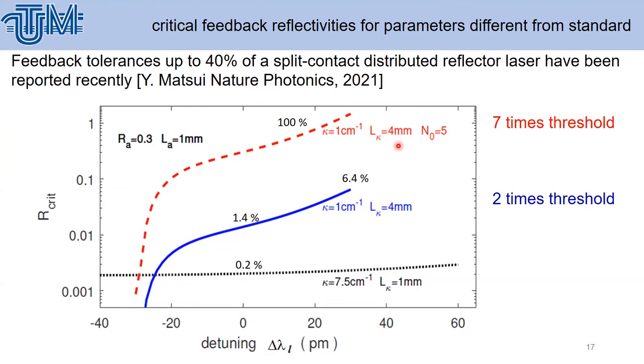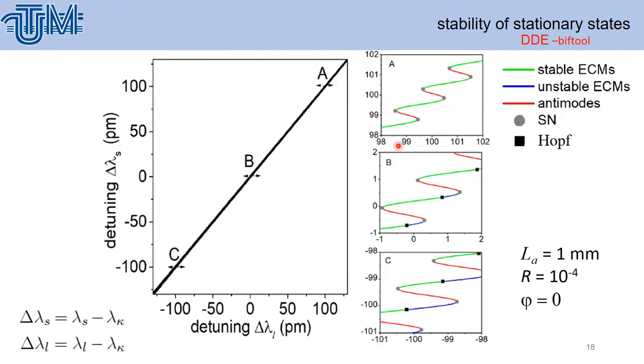We also look for stability analysis of stationary states. We present here stable external cavity modes by green line, unstable external cavity modes by blue, and we also show saddle node bifurcation. This figure allows us to look for regions where the stable modes are present.